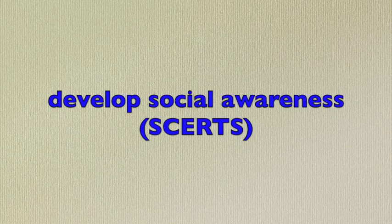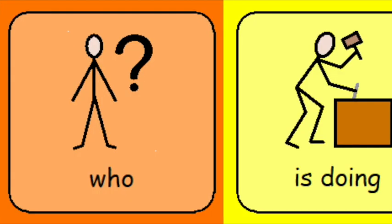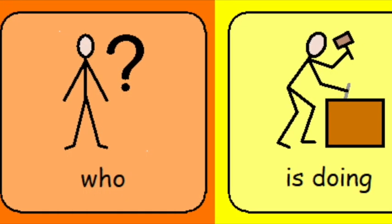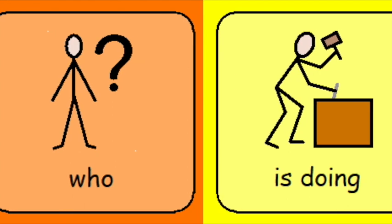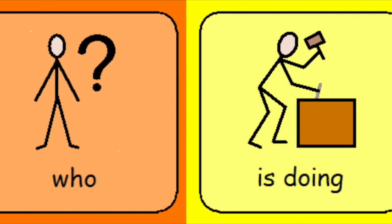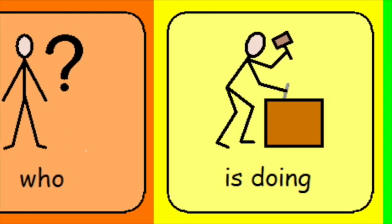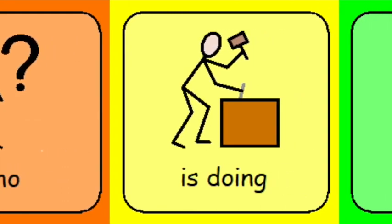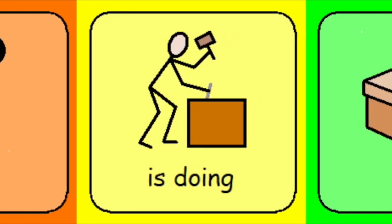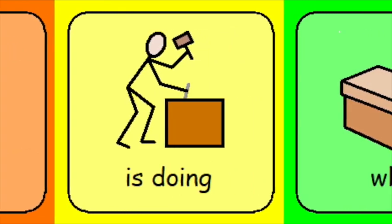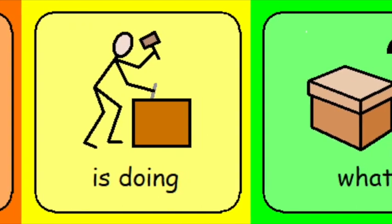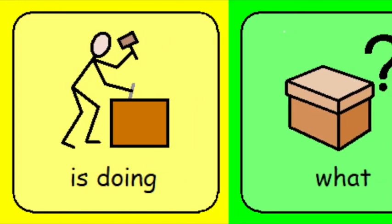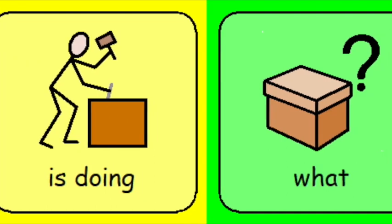Some of the research for this comes from the CERTS model — I'll put a link to more info about that in the video description. So how does it work? As you can see, each sentence has an orange bit, a yellow bit, and a green bit. The orange bit is for who — that's the subject of your sentence, usually a person but it could be an animal or a character. The yellow bit is for a verb, also known as a doing word, and the green bit is for an object. So you end up with: who is doing what.